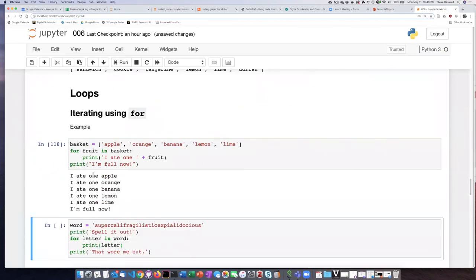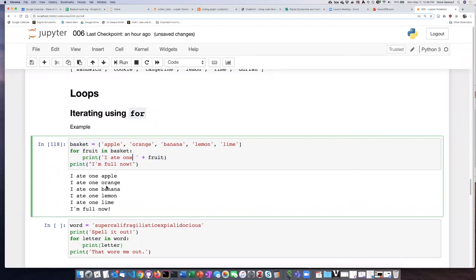And we see each time it executes the indented line, it substitutes in a different fruit as it iterates through the list. And then once it's iterated through the last item on the list, which is lime, then it goes out and continues with the non-indented code. And so it prints, I am full now.